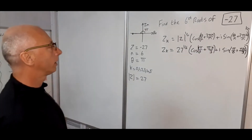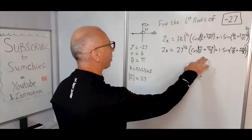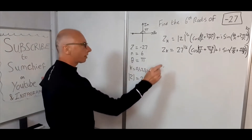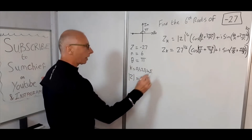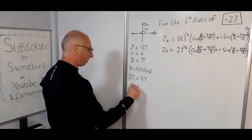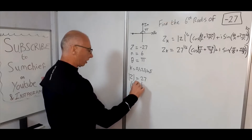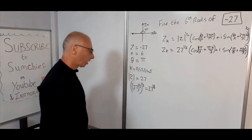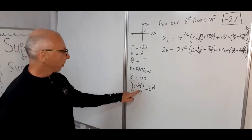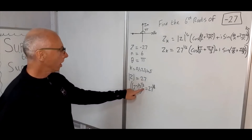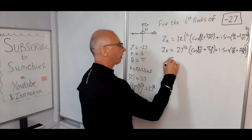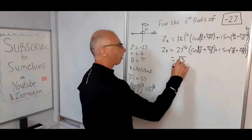Now, 27 to the 1/6: using laws of indices, 27 to the power of 1/3, then to the power of 1/2, equals 27 to the 1/6. The cube root of 27 is 3, and then the square root of that gives us root 3. So the modulus for each root is square root of 3.